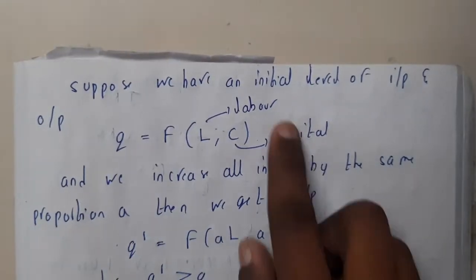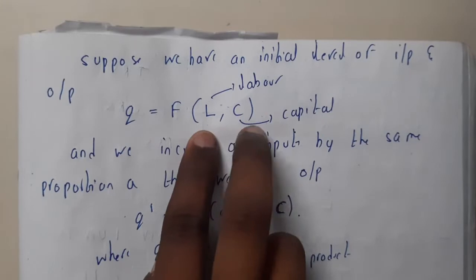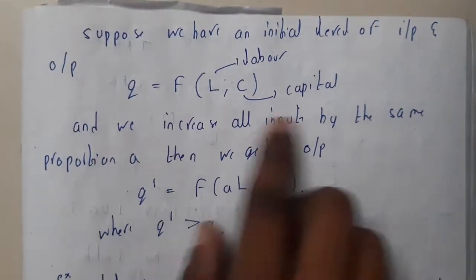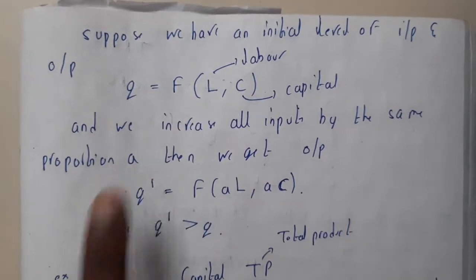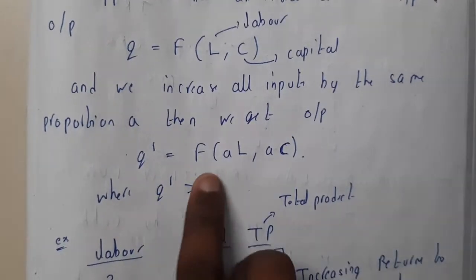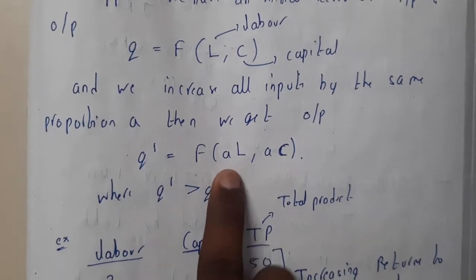Suppose we have initial values of the input: q equals f of L comma C, where L is labor and C is capital. If we are increasing them with equal proportion, q dash equals f of aL comma aC. This will be your new number of labor and capital, where q dash is greater than q.